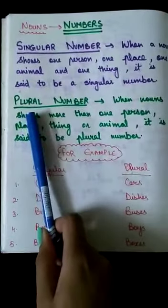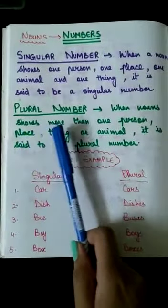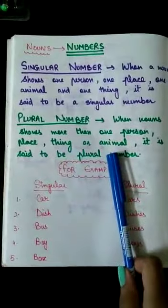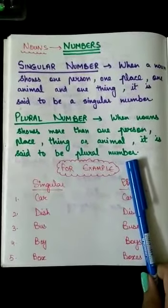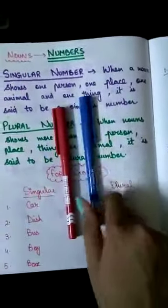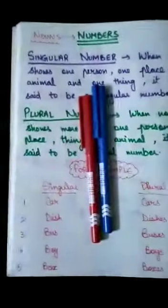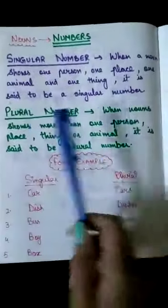Now let's talk about plural number. When noun shows more than one person, place, thing or animal, it is said to be plural number. So when I am having two pens with me or more than two pens with me, then I will consider it as plural number. Right?